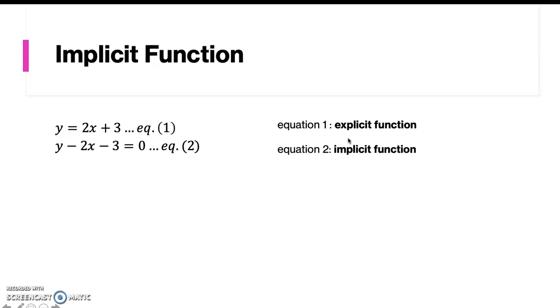So equation 2, equation 1 we say as an explicit function and equation 2 is called an implicit function.